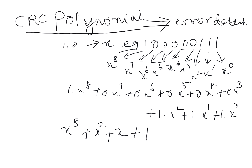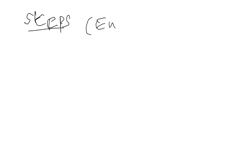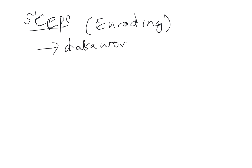In this polynomial representation, how are we going to perform CRC? For CRC error detection you have to go through an encoding and decoding process. I will give you the steps first. For encoding: first, you will be given a data word and a divisor.